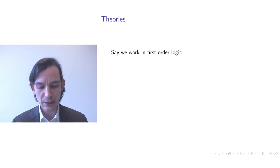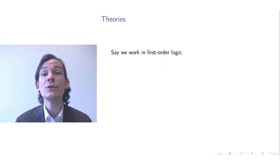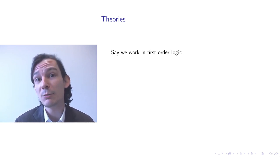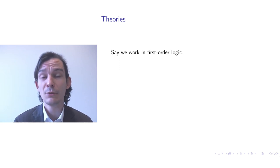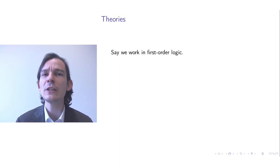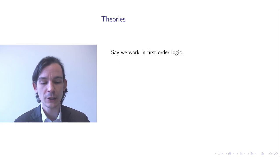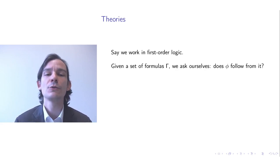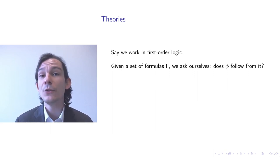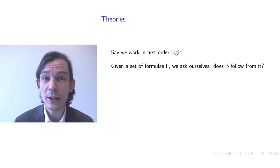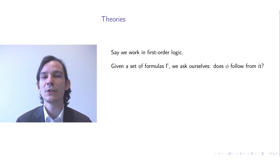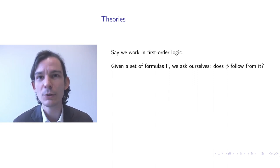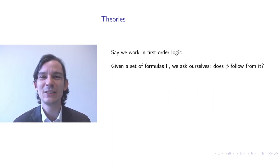To give you a bit of background, let's first consider theories and their axiomatization, and then later I'll explain what the Interactive Theorem Provers do. For simplicity, let's say we work in first-order logic. If you have a particular set of formulas in first-order logic, you can ask yourself whether a particular other formula phi follows from that given set of formulas gamma — that is, is phi a necessary consequence from the formulas in gamma?